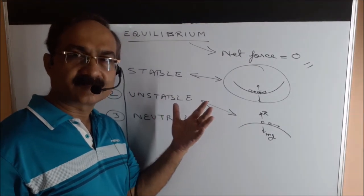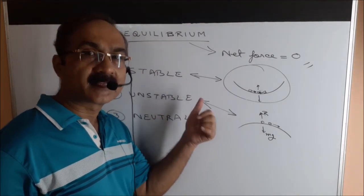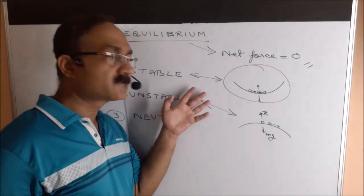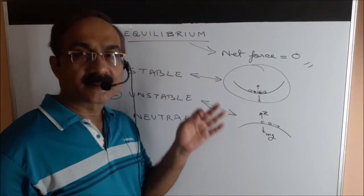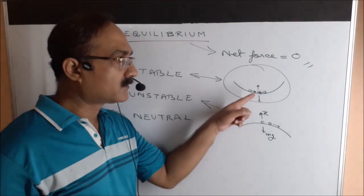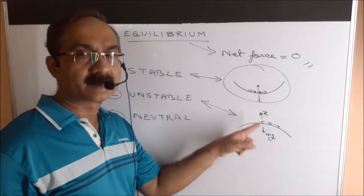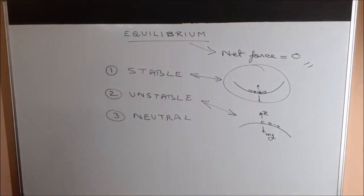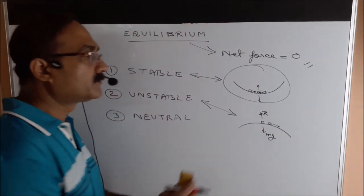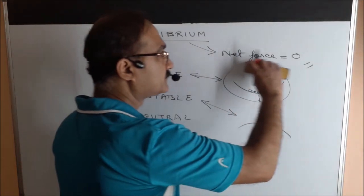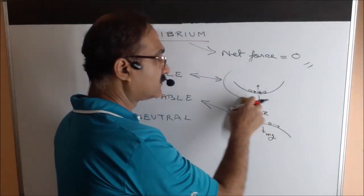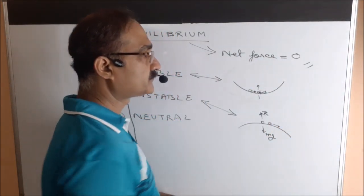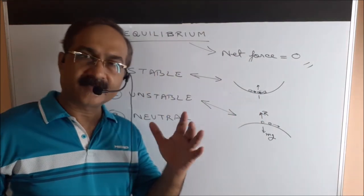Think of it this way: in stable equilibrium, if you displace the body a little it comes back — so it's stable. In unstable equilibrium, if you displace it from the equilibrium position it goes further away — so it's unstable. Always think of these two diagrams to remember the concept.